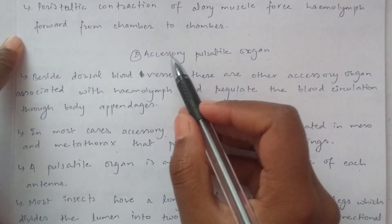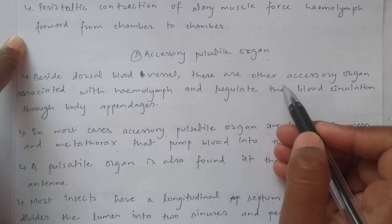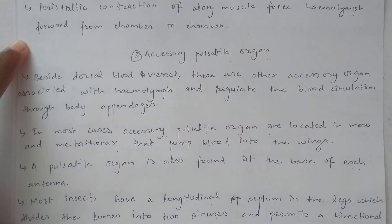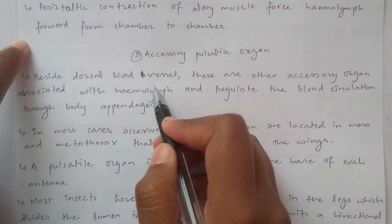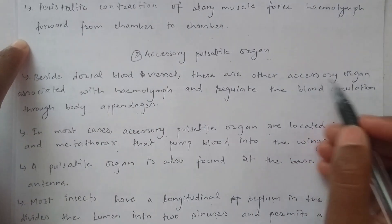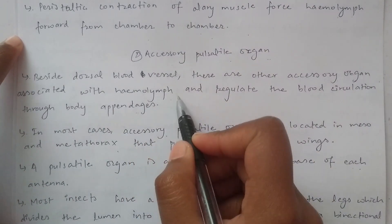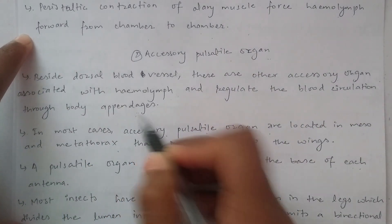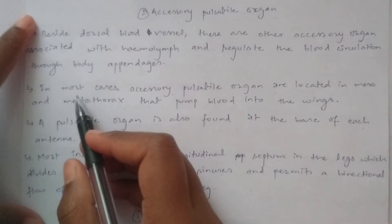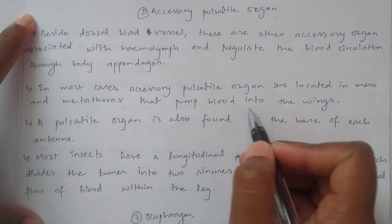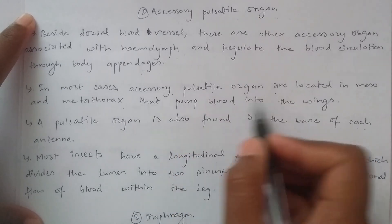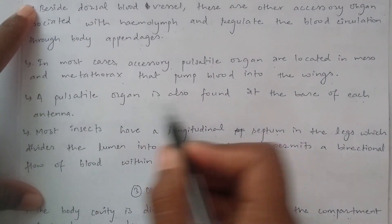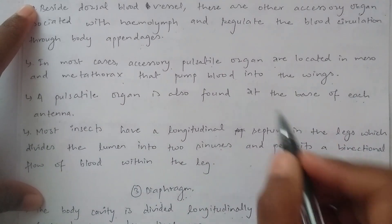In addition to the dorsal blood vessel, there are accessory pulsatile organs associated with the hemolymph that regulate blood circulation through body appendages. Accessory pulsatile organs are located in the mesothorax and metathorax, pumping blood into the wings. A pulsatile organ is also found at the base of each antenna.